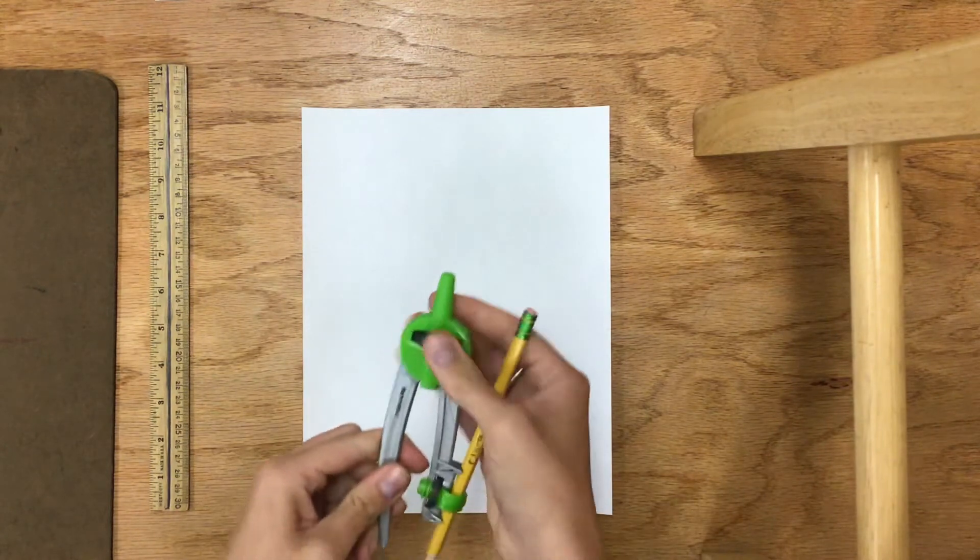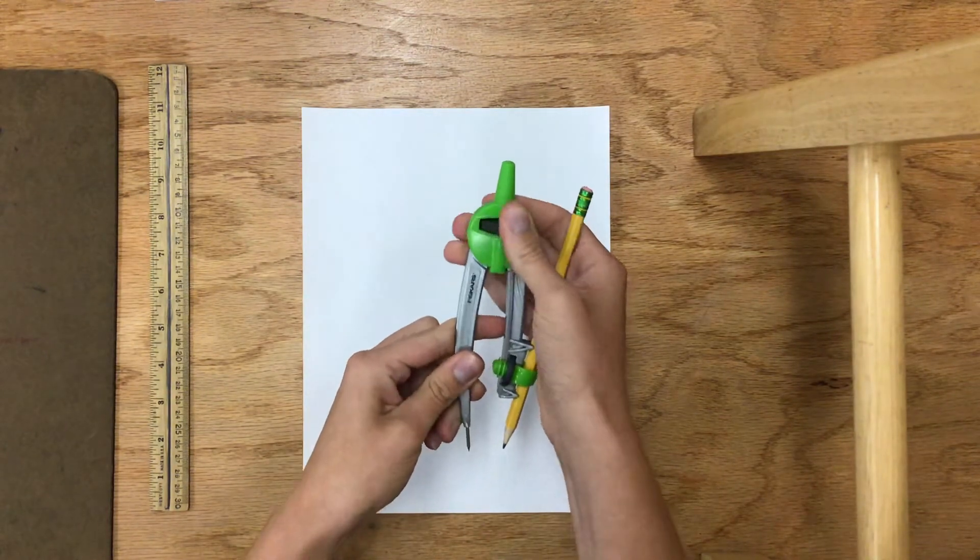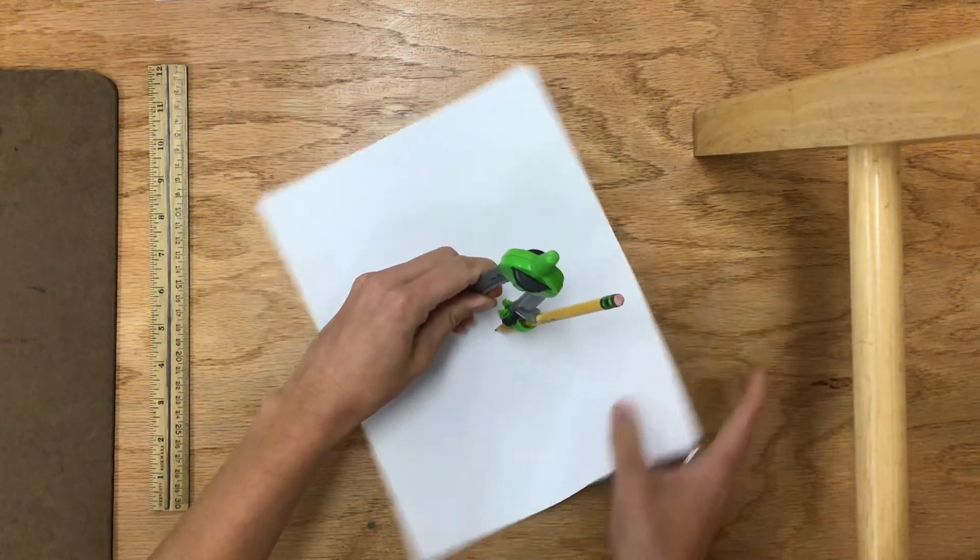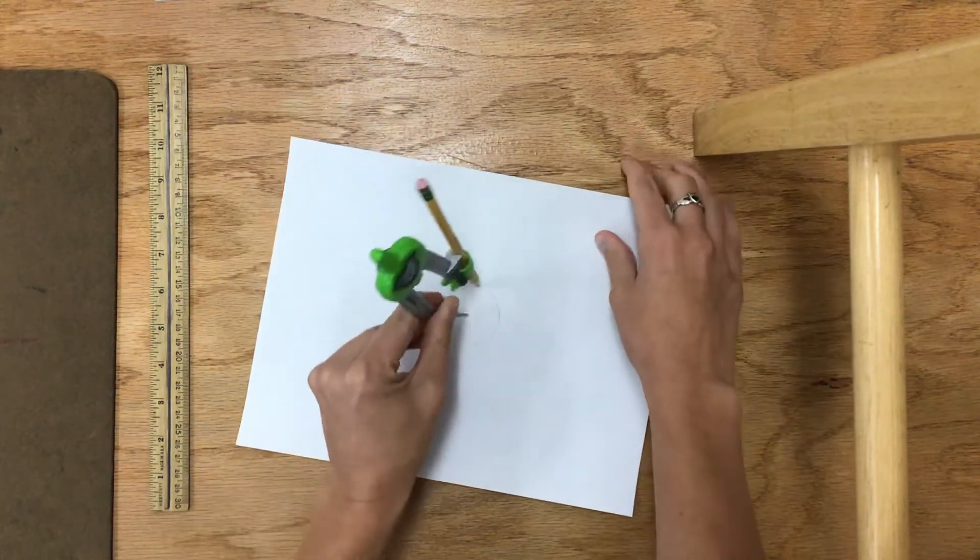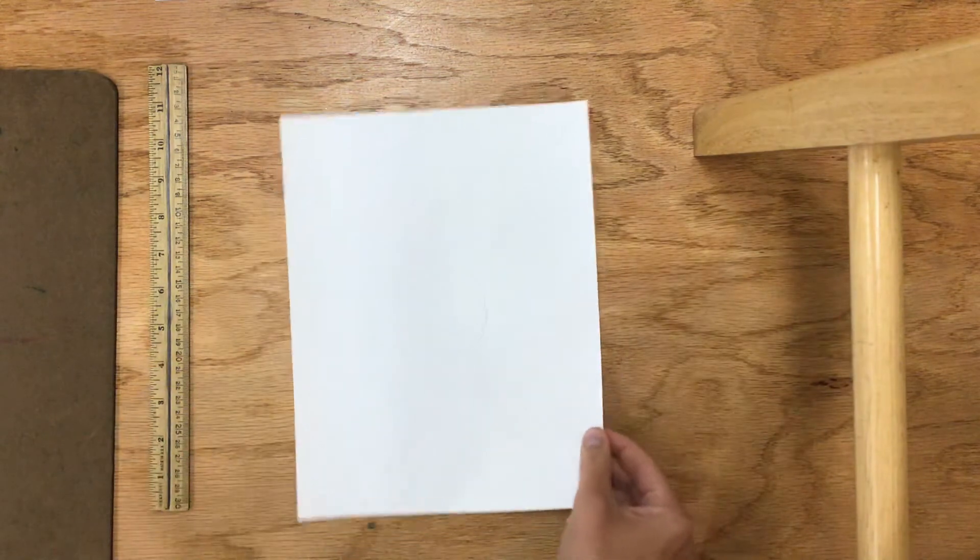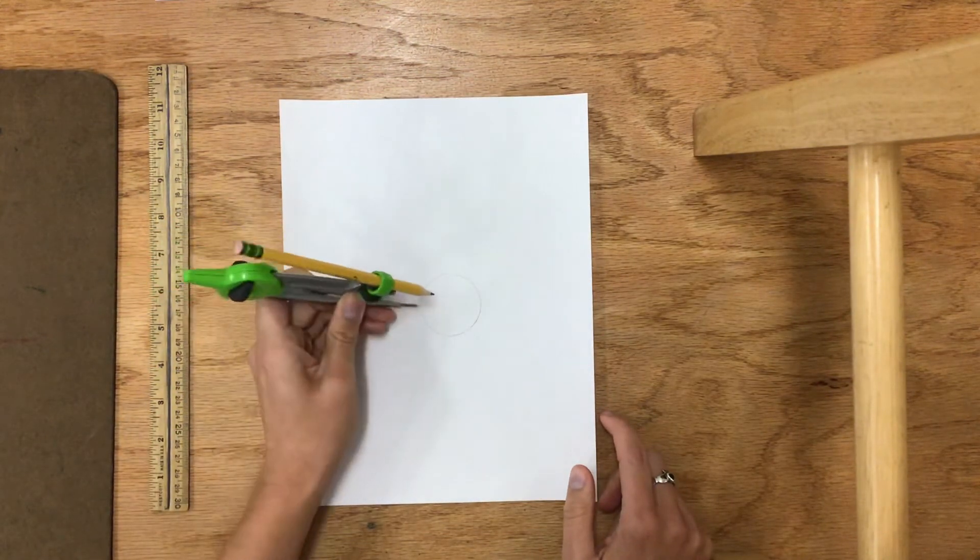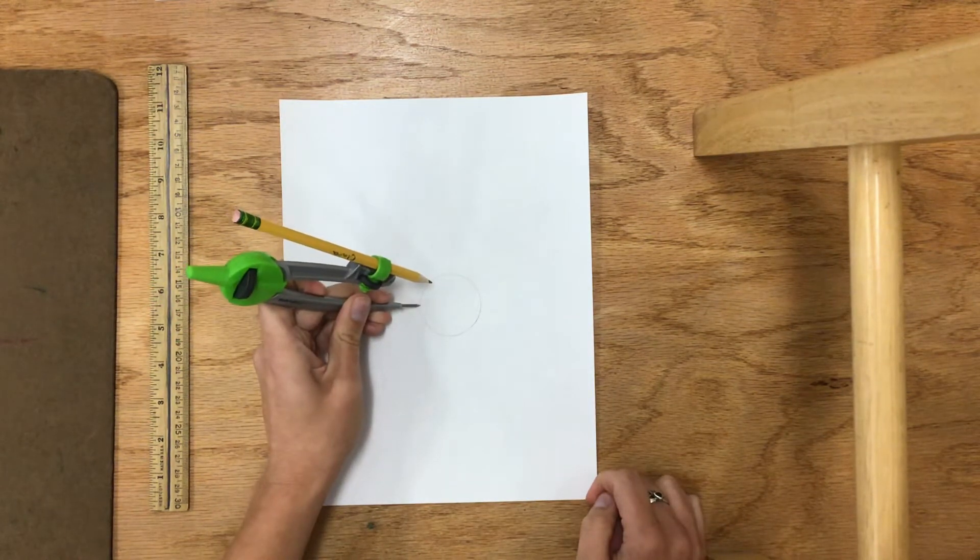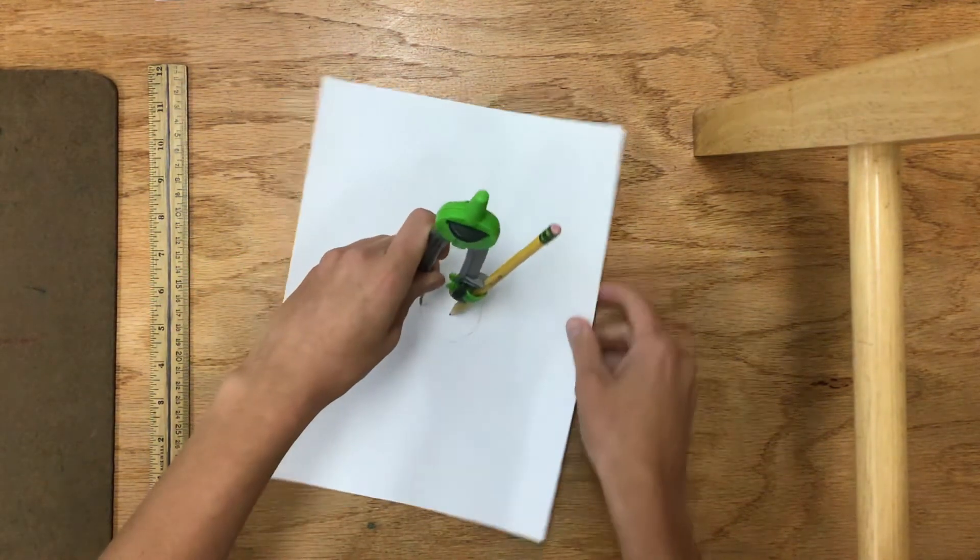So I want to start, I kind of want my circle to be somewhat small. I'm just going to start by making a little circle, and then from there I'm going to put the point of my compass on the circumference of that circle and make another one.